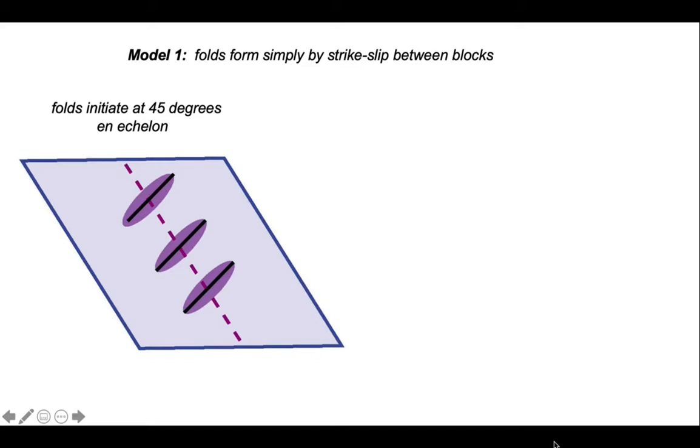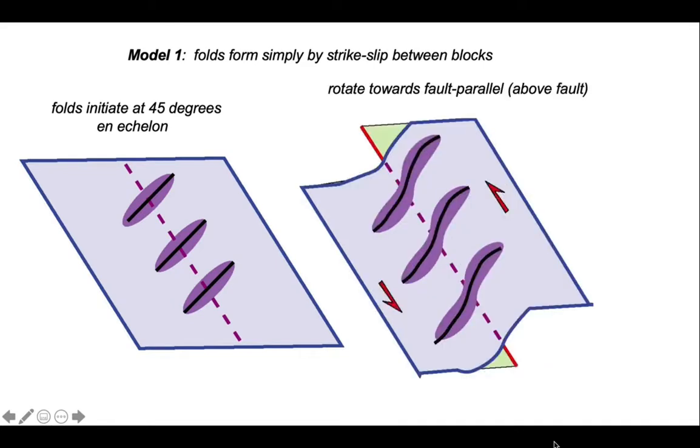This setup will impose a shear on the sedimentary cover, and folds will form as a consequence of this shearing. Folds formed in this way will initiate at 45 degrees to the fault zone and form an en echelon array. As a consequence of the shearing, the folds above the fault zone are spinning.